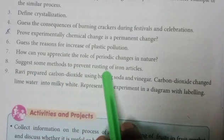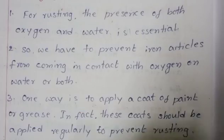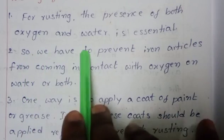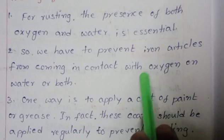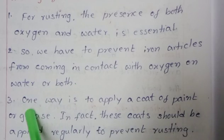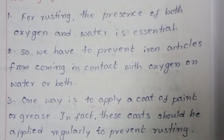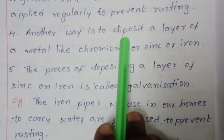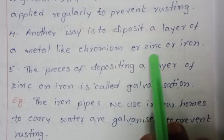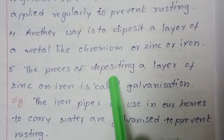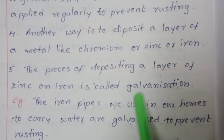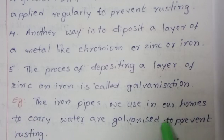Suggest some methods to prevent rusting of iron articles. For rusting, the presence of both oxygen and water is essential, so we have to prevent iron articles from coming in contact with oxygen, water, or both. One way is to apply a coat of paint or grease regularly. Another way is to deposit a layer of metal like chromium or zinc on iron. The process of depositing a layer of zinc on iron is called galvanization. For example, iron pipes used in homes to carry water are galvanized to prevent rusting.